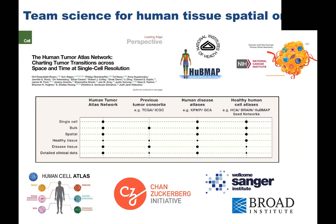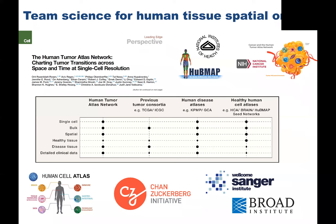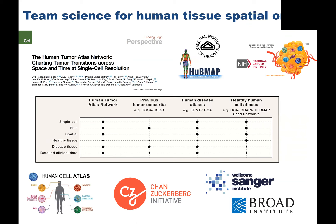Outside federal agencies, the Human Cell Atlas project is heavily supported by the Chan Zuckerberg Initiative, the Sanger Institute, and the Broad Institute together. There's a real team science happening now across the country and around the globe to collect spatial atlas information, ideally at cellular resolution. That is the goal of this kind of global team science research.